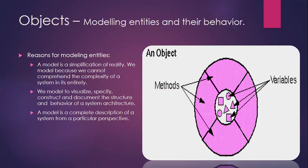A model is a complete description of a system from a particular perspective. For example, if you make a model of a car, what are the basic features we see in a car? The engine is one of the most important parts, then the tires, the wheels, and the axle shaft. These are all the structure or state of a model.